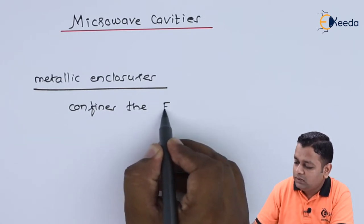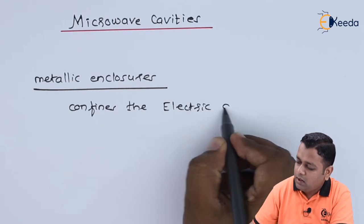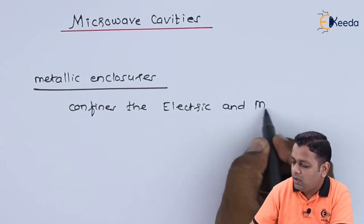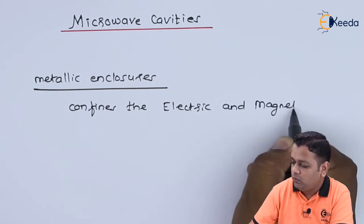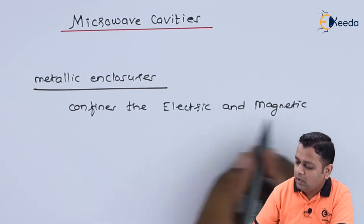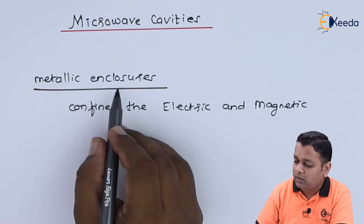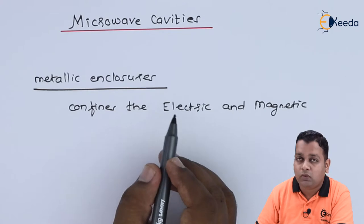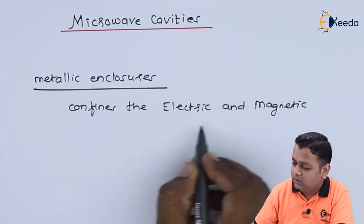One is Electric and another is Magnetic. Both forms of energy are confined by the Metallic Enclosures called Microwave Cavity Resonators.